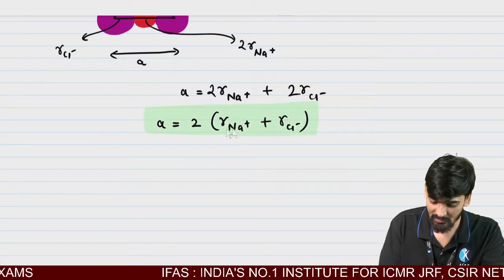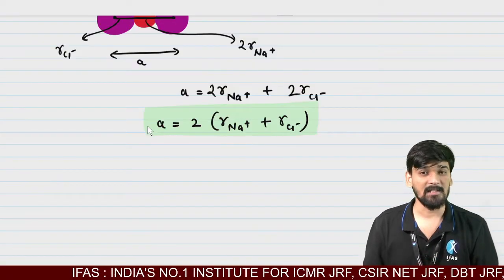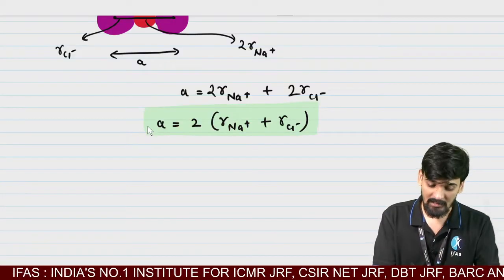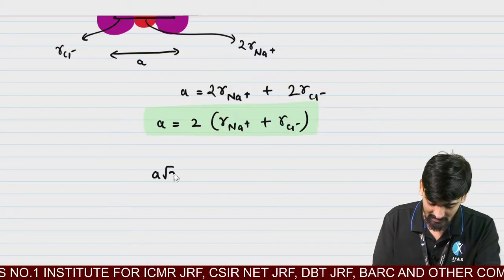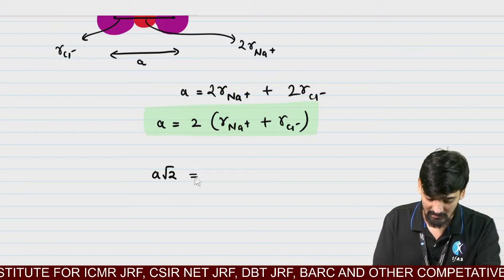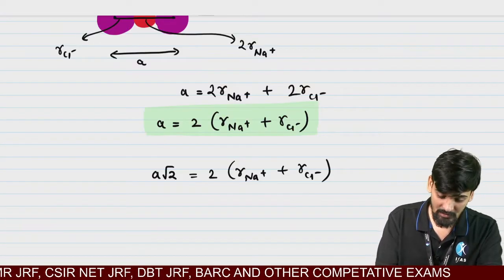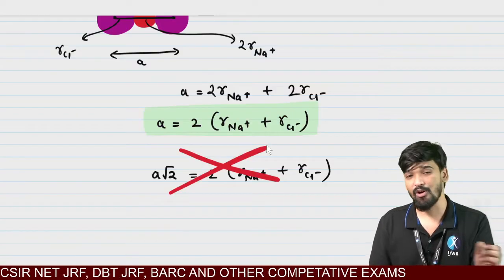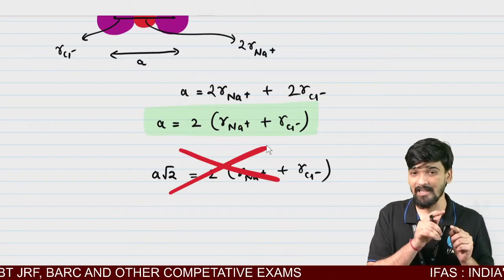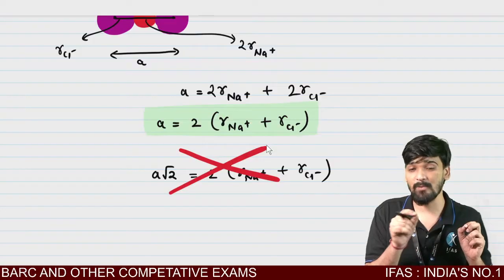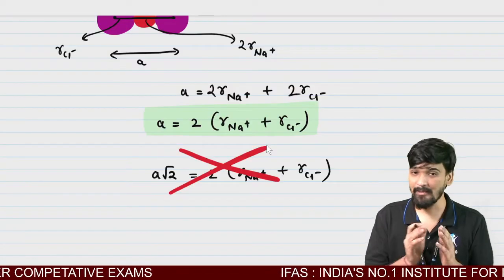Sometimes students make a mistake: because NaCl is an FCC-type structure, they think the relation comes from atoms touching along the face diagonal. But this is wrong, because the face-center atoms are all chlorine, and chlorine atoms do not touch each other along the face diagonal since they are the same type of anion.